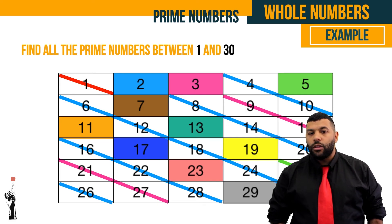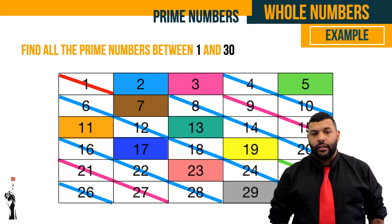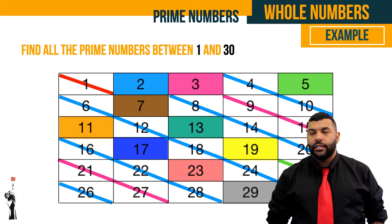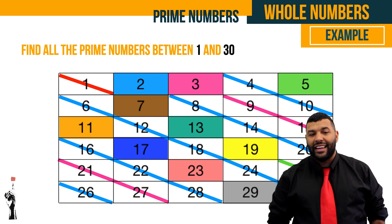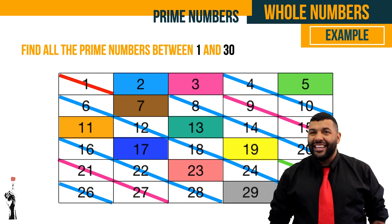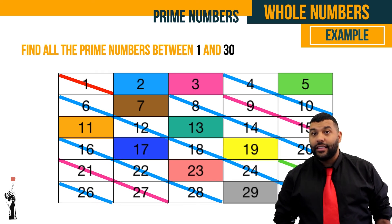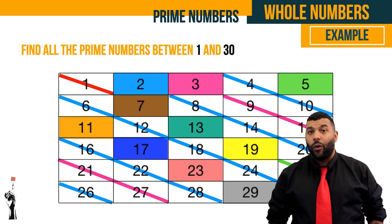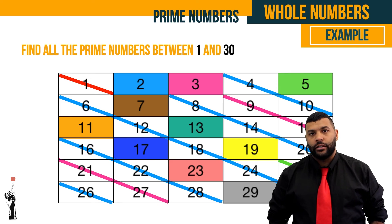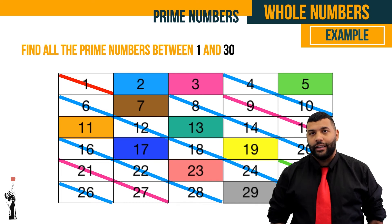The prime numbers between one and thirty are: two, three, five, seven, eleven, thirteen, seventeen, nineteen, twenty-three, and twenty-nine. All the numbers that were scratched out — except for one — are composite numbers. One, however, is a universal number so it stands alone by itself.